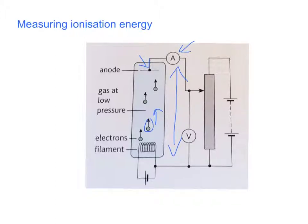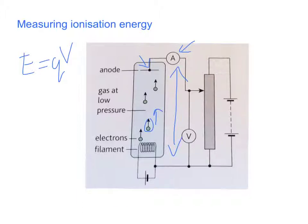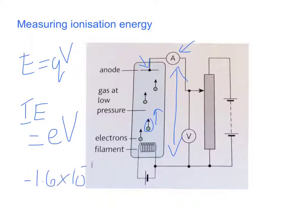To calculate the ionisation energy, when we know the potential difference where this increase in current occurs, the ionisation energy is equal to the work done on each electron from the filament, given by the equation eV. Going back to GCSE, electrical energy is equal to the charge times the potential difference. So the ionisation energy (IE) is equal to the charge on an electron times the potential difference where we see the sudden increase in current. The charge on an electron is minus 1.6 × 10⁻¹⁹ joules.